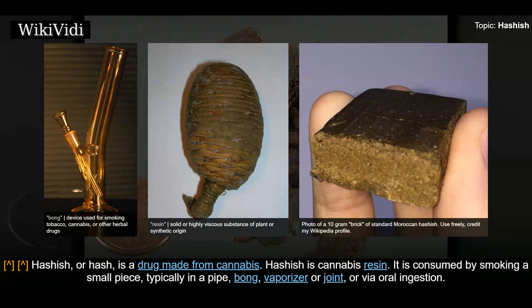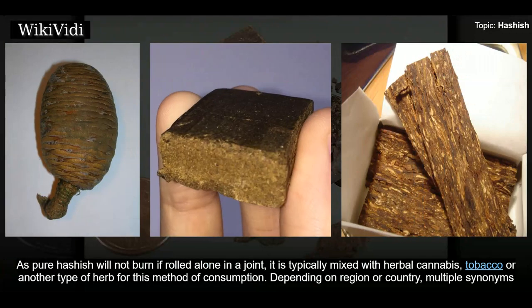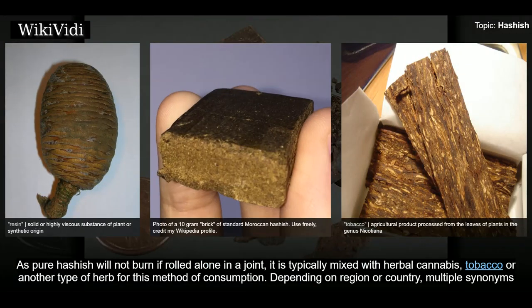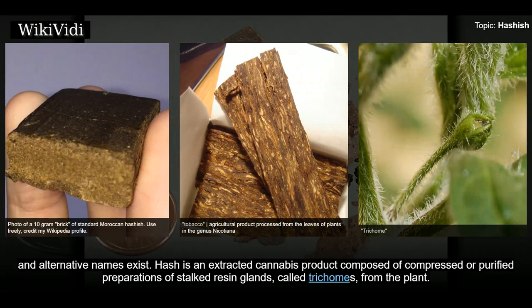Hashish, or hash, is a drug made from cannabis. It is cannabis resin, consumed by smoking a small piece typically in a pipe, bong, vaporizer, or joint, or via oral ingestion. As pure hashish will not burn if rolled alone in a joint, it is typically mixed with herbal cannabis, tobacco, or another herb. Depending on region or country, multiple synonyms and alternative names exist.